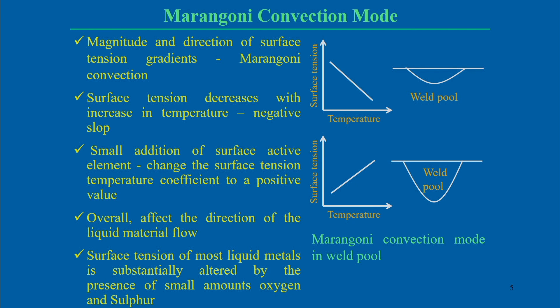The magnitude and direction of the surface tension gradients — sometimes called Marangoni convection — along with the associated Marangoni shear stress, act on the surface and are mostly associated with the effect of surface tension force in material flow. Surface tension must be present at the interface between the molten material (liquid medium) and the shielding gas. The surface tension force is more influential on weld pool shape results in the presence of surface active elements.